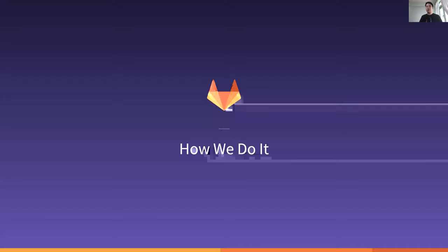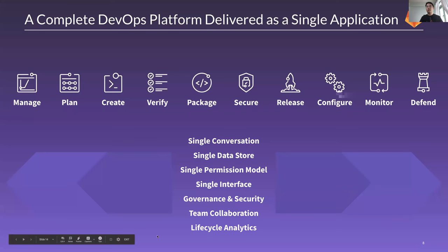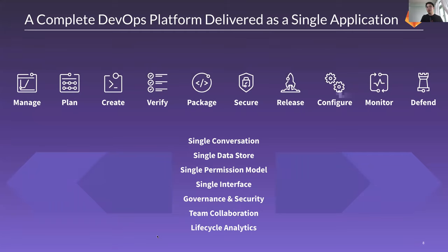That's kind of where we see ourselves at GitLab — moving in the same direction. We want a complete DevOps platform that runs end-to-end: all the way from Manage, Plan, Create, Verify, Package, Secure, Release, Configure, Monitor, and Defend — all in a single platform, a single pane of glass, using the same permission model. You don't have to integrate all your LDAPs with many different tools, and everything lives in a single data store. That simplifies things and reduces conflicts between teams.